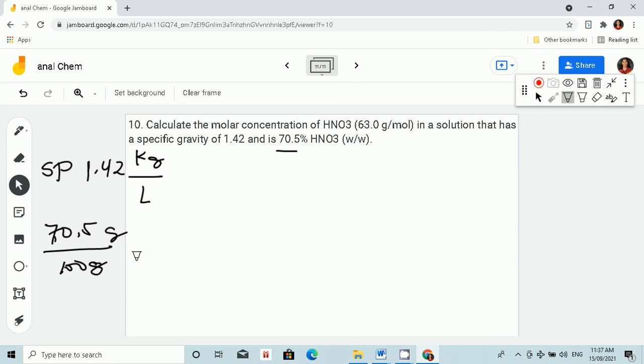Okay, so given these numbers, we can now solve the concentration of nitric acid. So let's start with the specific gravity. So we have specific gravity, molar HNO3 is equal to 1.42 kilograms. Since it's kilograms, per liter.